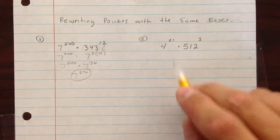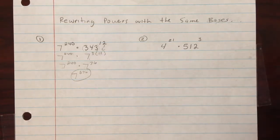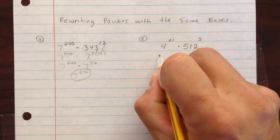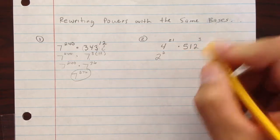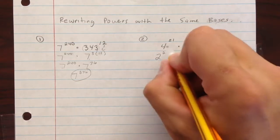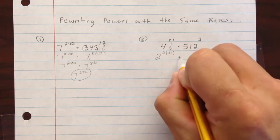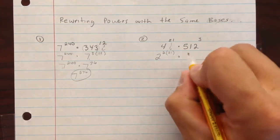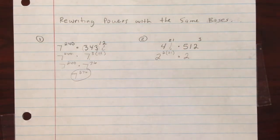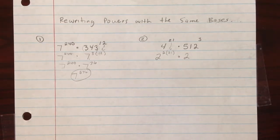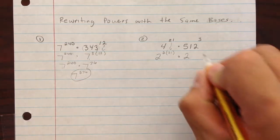So you have to use a smaller base, like 2. We take 2 squared, which is equal to 4, and bring down the 21. And for 512, we're going to use a calculator — it's going to be 2 to some power. You just keep going: 2 times 2 times 2 times 2 times 2. If you want to pause and try on your own, you can, then check back. And it is 2 to the 9th.